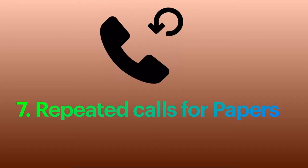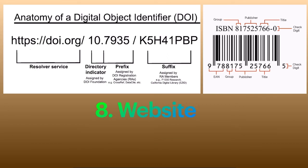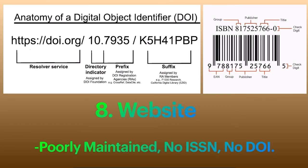There will also be repeated calls for papers through emails or phone calls. Additionally, when we look at the website, it will be poorly maintained and there will not be any ISSN number for the journal.